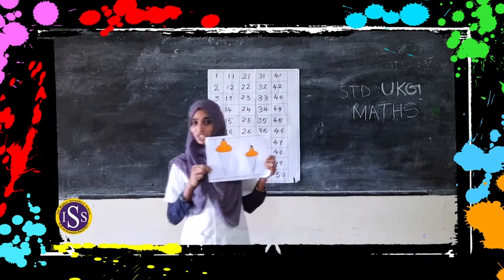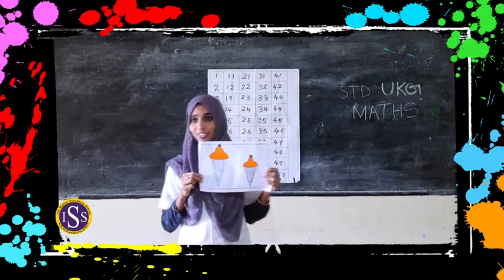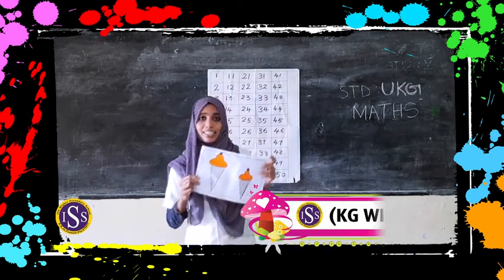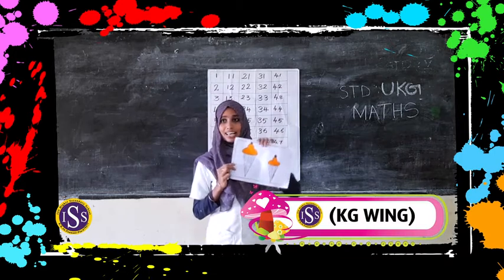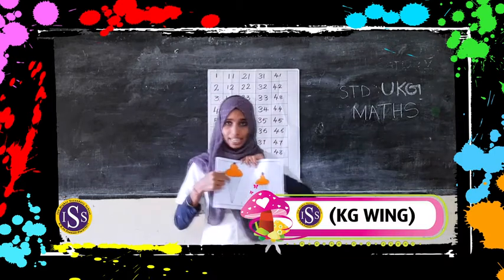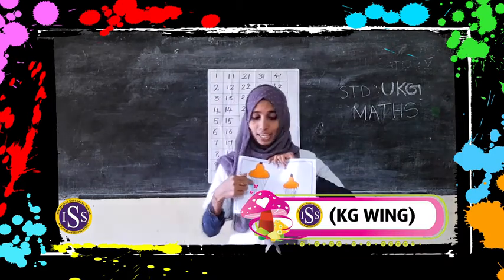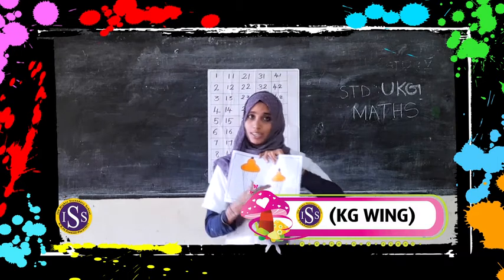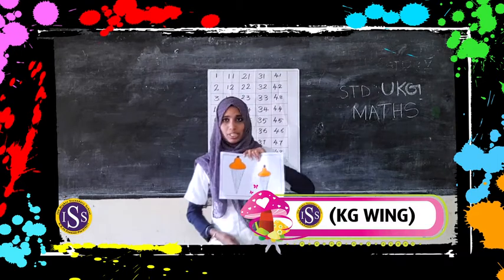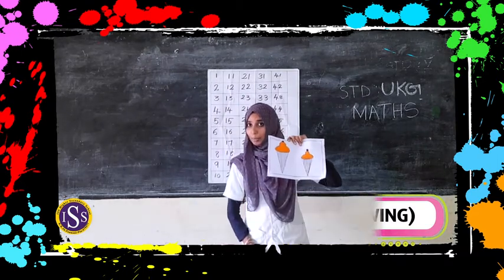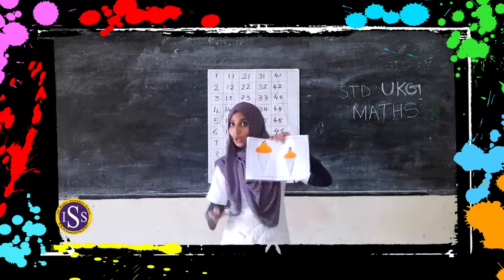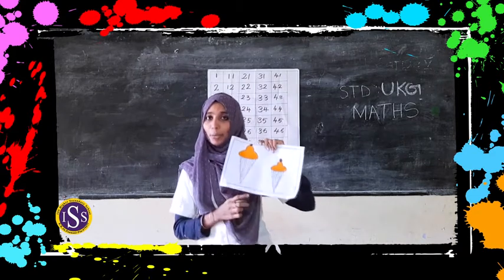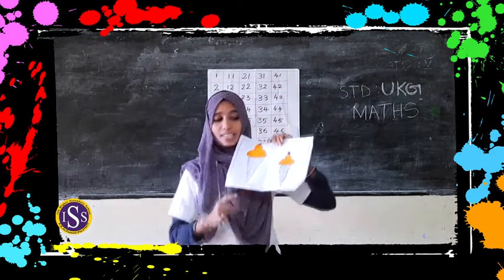And can you see the picture? What is this? This is ice cream. One is big and one is small. Big means wider. Small means small.